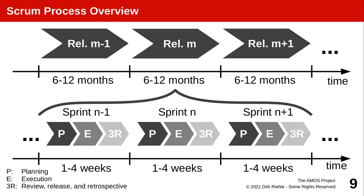The Scrum 2020 Guide talks about sprints — short time boxes or iterations in which you perform a full cycle of planning what you do, executing what you planned, and reviewing and assessing quality to make a release decision, finishing with a short retrospective. The key of agile methods is that sprint lengths are short: one week as in the AMOS project, two weeks more likely in industry, up to four weeks but not longer.